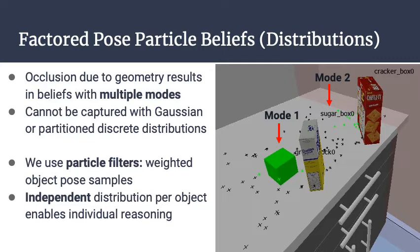In order to solve these kinds of problems, we first need a representation for our belief — our internal distribution over the current state — that supports multiple modalities. In this example, the green block could be behind the sugar or the cracker box, and given that most other regions are visible, it's unlikely to be elsewhere. This distribution has two peaks, so we need to go beyond a discrete partition or Gaussian. Namely, we use particle filters, representing weighted samples of object poses, where green samples are high-probability poses and black samples are low-probability. We also factor beliefs to be independent across each object, which allows us to reason about changes in one object at a time.